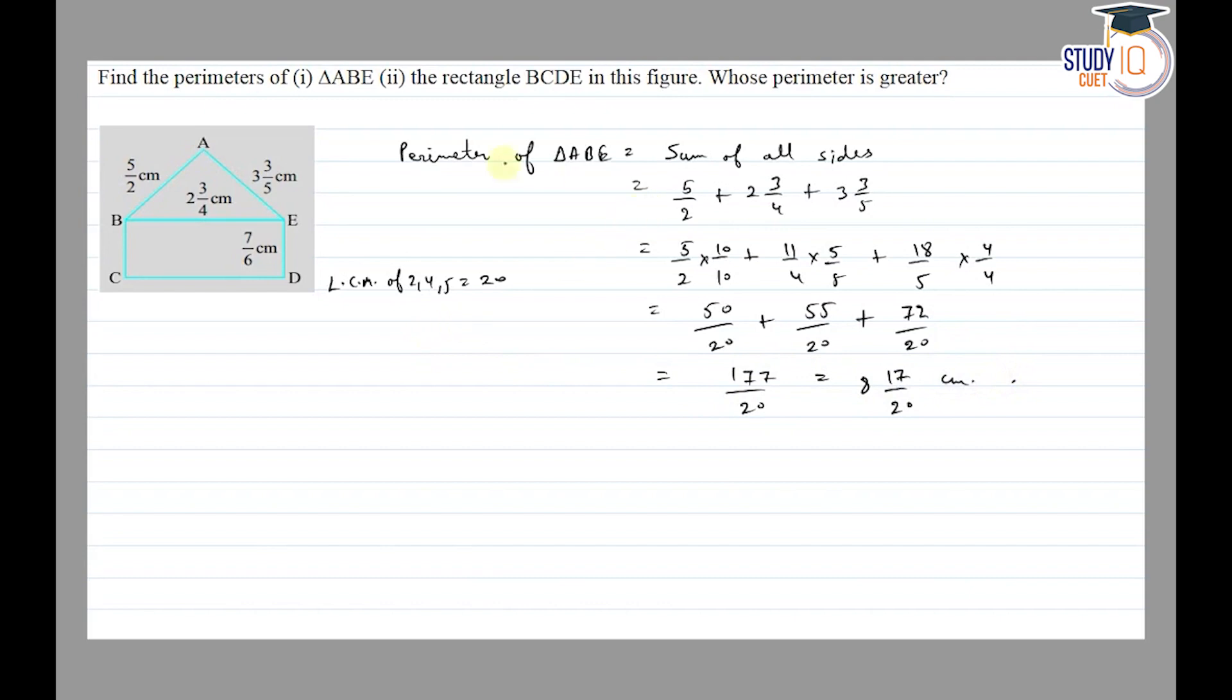Then, the perimeter of rectangle BCDE is equal to 2 times L plus B. This is going to be 2 times the length, which is 2 and 3 by 4, so 11 by 4, plus the breadth 7 by 6.